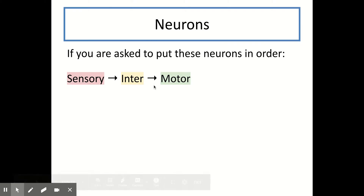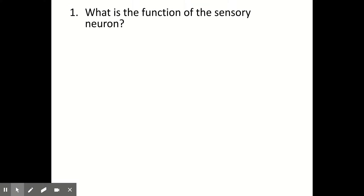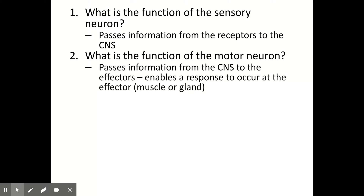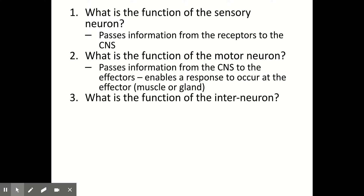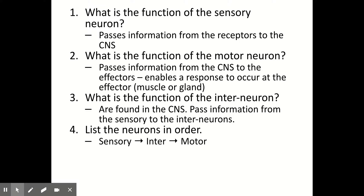Before we move on, let's try another few quick questions. The sensory neuron passes information from the receptors to the CNS. The motor neuron passes information from the CNS to the effectors, enabling a response to occur. The interneuron passes information from the sensory to the motor neurons, and is found within the CNS — we only find interneurons in the CNS. Listing the neurons in order: sensory, inter, then motor.